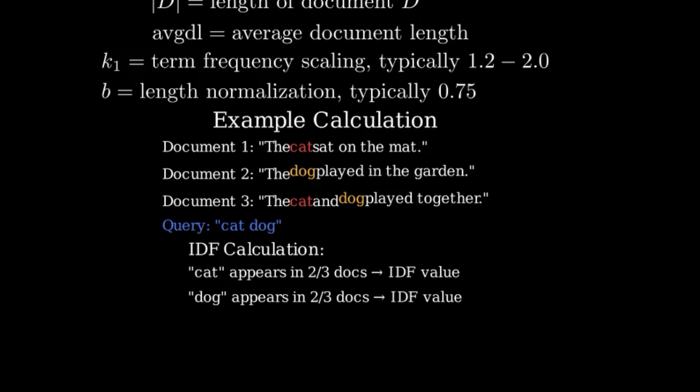First, we calculate the IDF for cat and dog. Cat appears in 2 out of 3 documents, so its IDF is relatively low. Dog appears in 2 out of 3 documents, so its IDF is also relatively low.